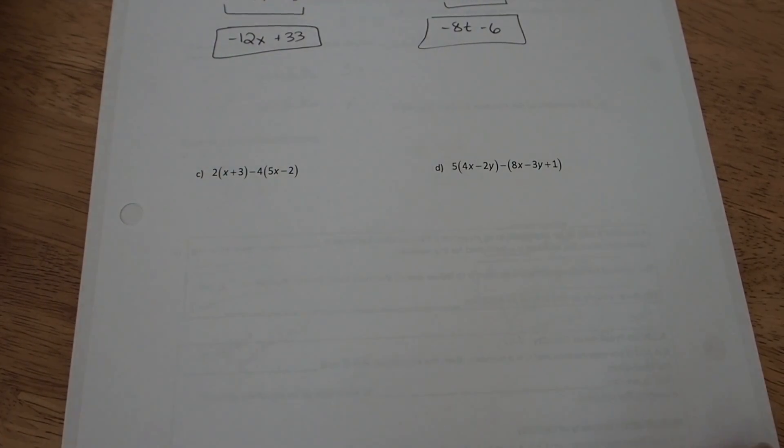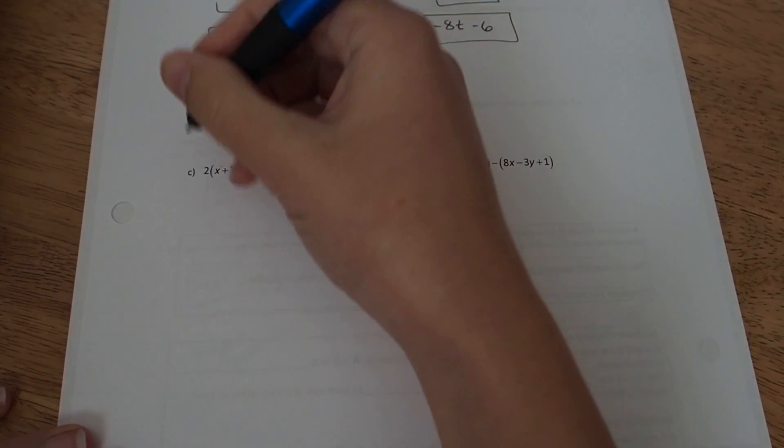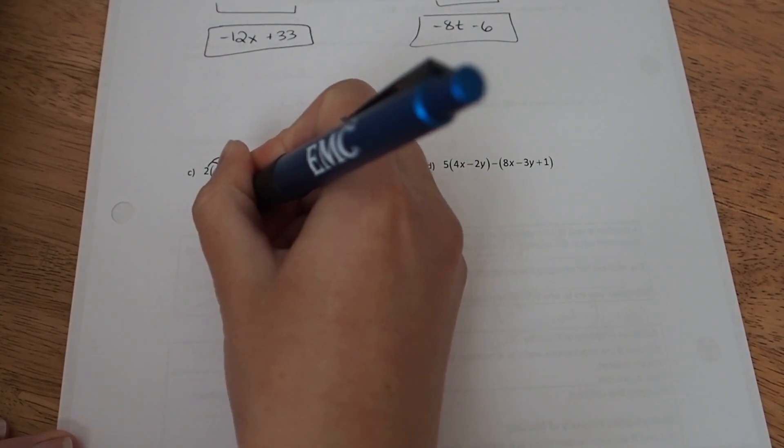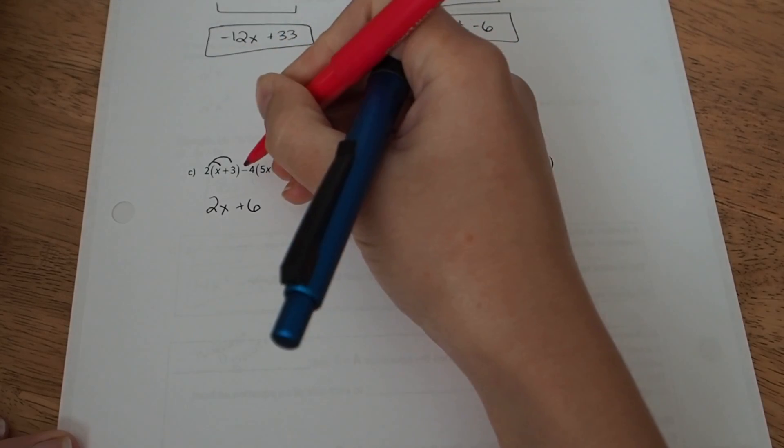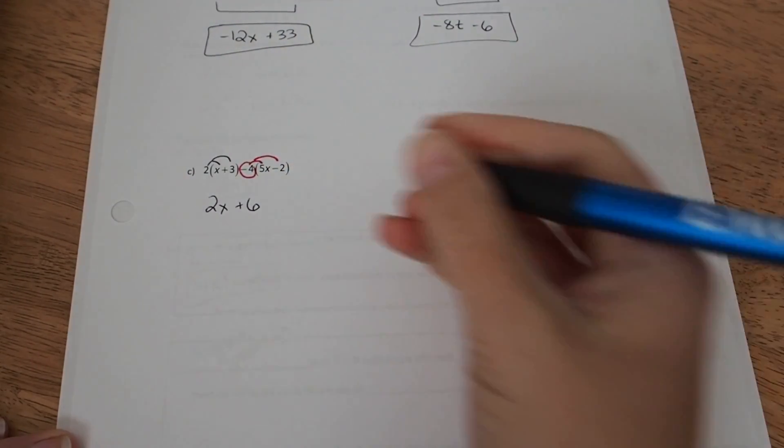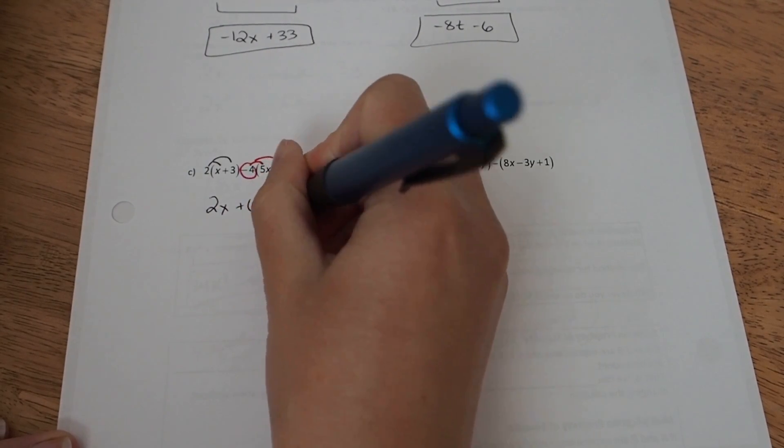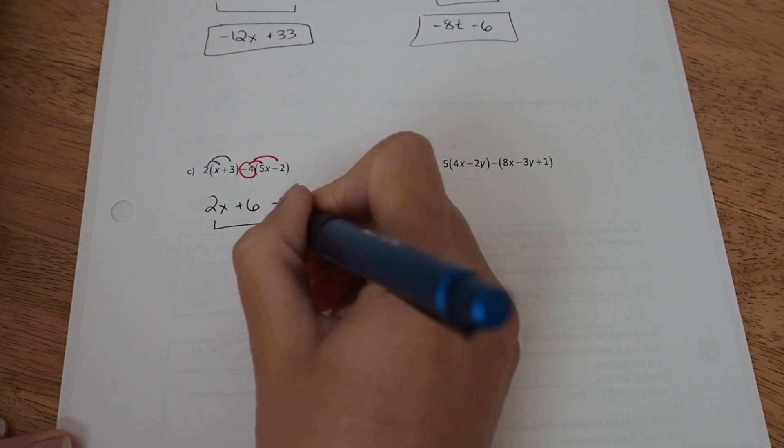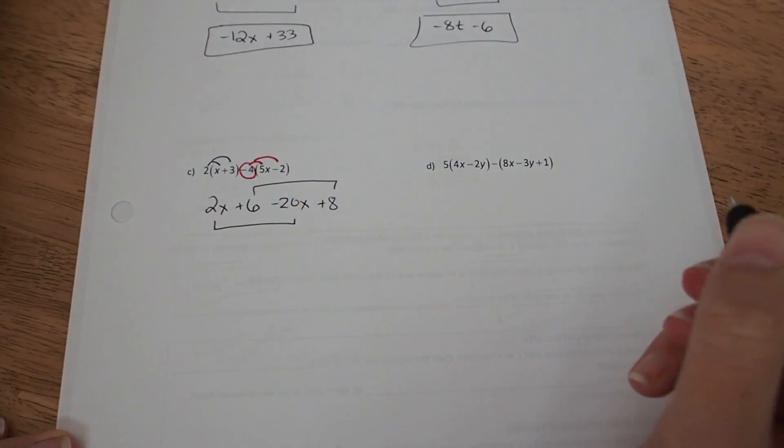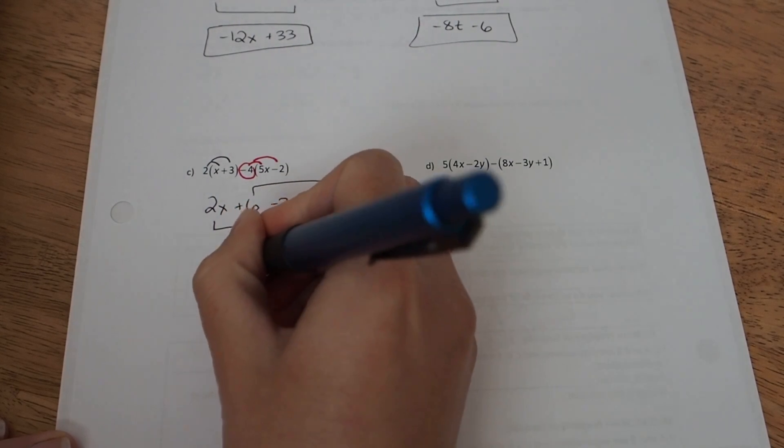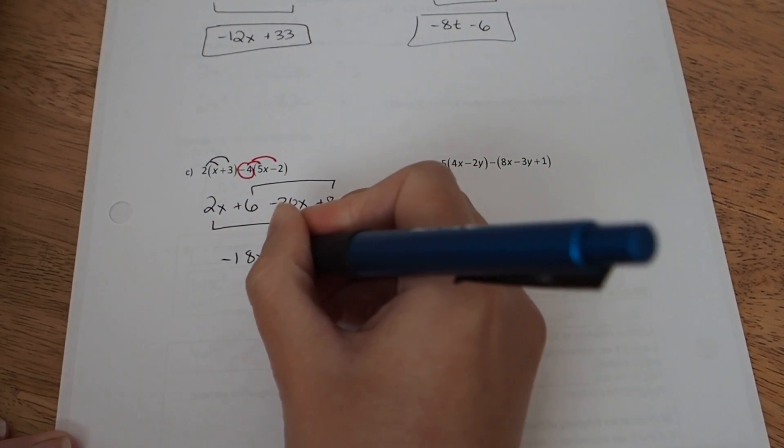Parts c and d. Part c, two distributes to work on. I'm going to take 2 times x is 2x and 2 times 3 is 6. And then for the second to distribute, it's going to be a negative 4 times 5 and a negative 4 times negative 2, which will give me negative 20x and plus 8. I'm going to group the x's and group the numbers. We always do our letters first. So 2x minus 20x is going to be negative 18x. And 6 plus 8 is 14.